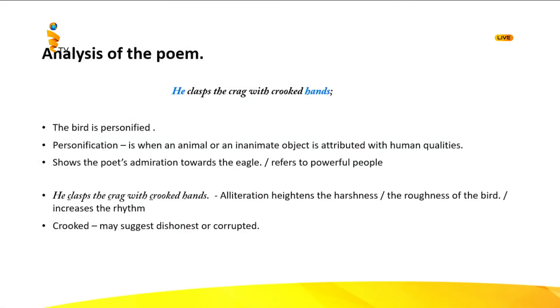Let's look at the first line again: He clasps the crag with crooked hands. The poem begins with a description of a creature labeled with the pronoun 'he.' The poet is describing an eagle on top of a crag, which means a rocky cliff. The eagle is clasping — holding onto or clutching — the rock with his crooked hands. Crooked means twisted or misshapen. So here is an eagle holding onto a rocky cliff with his twisted or crooked hands.